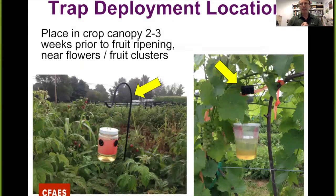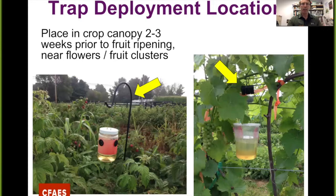Let's talk about trap deployment actually inside the field. We want to place those traps out in the canopy about two to three weeks prior to fruit ripening — definitely get those traps out before the fruit ripens. We want to put them right where those flower clusters and fruit clusters are going to be. For raspberries, early in the season the canes are fairly weak, so if you put the trap on a cane it might weigh it over. I bought a simple shepherd's hook, stuck it in the ground, and put the trap right in the canopy. For a vineyard, get the trap right in there with the vines, next to the grapes.